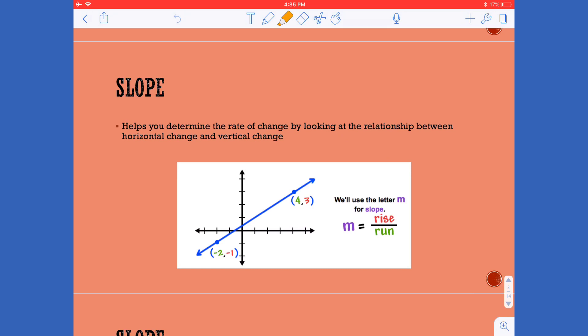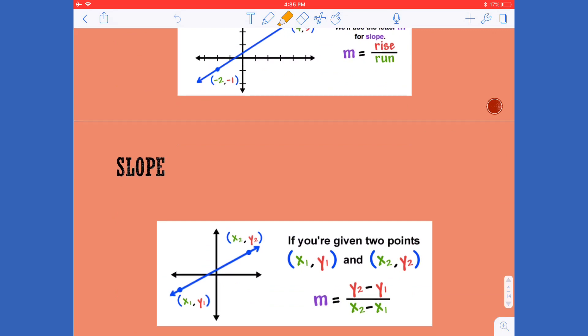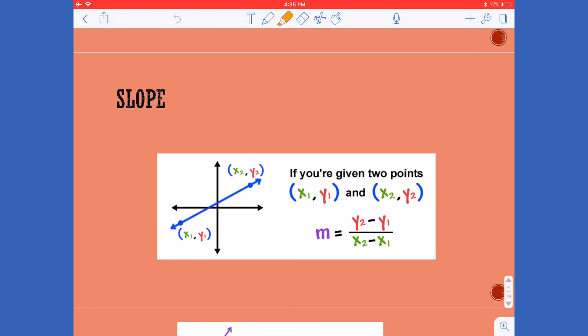We'll use the letter m to represent slope and we say rise over run, and if you need the actual formula that's y2 minus y1 over x2 minus x1, because again it's the difference in rise, so those are your y values your vertical change, over your run your horizontal change which are your x values.